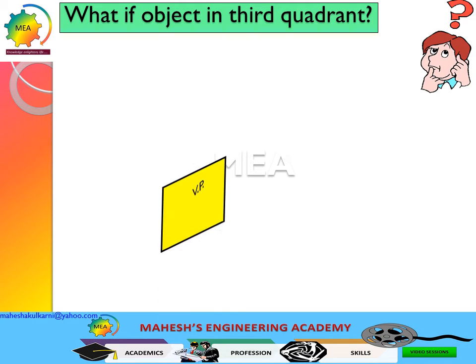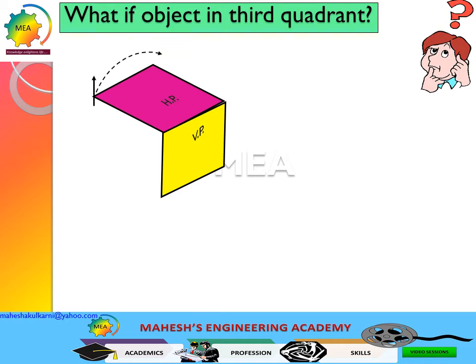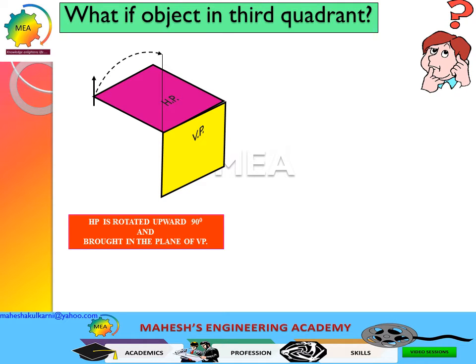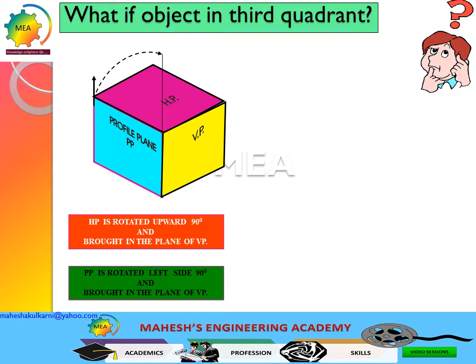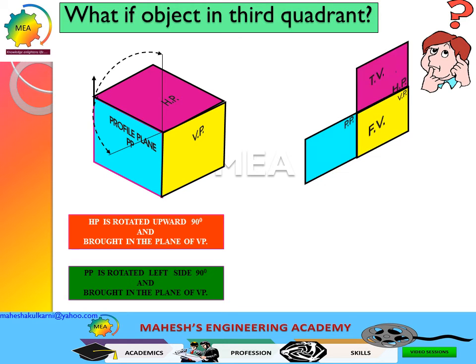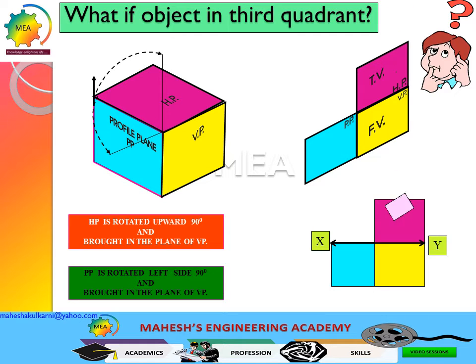What if the object is in the third quadrant? Consider the vertical plane and horizontal plane. As per the principle of projections, the horizontal plane will be rotated upward — that is clockwise 90 degrees — and the profile plane is rotated to the left side 90 degrees and brought into the plane of the vertical plane. When these planes are rotated, the top view will be on the horizontal plane, the front view will be on the vertical plane, and the side view will be on the profile plane.